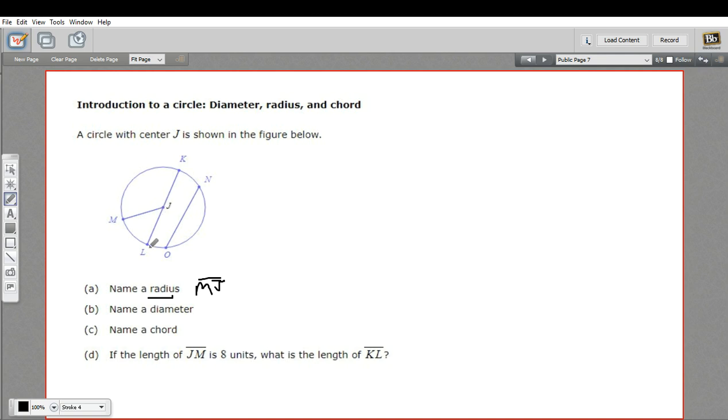Now, a diameter is a line that goes all the way across the circle and passes through the center. It has to pass through the center. So if we want to name a diameter here, there's only one here. It's from K all the way to L. So this would be segment KL.